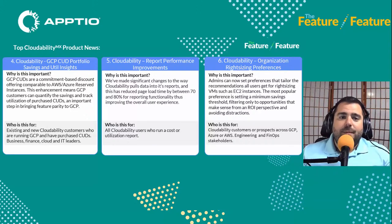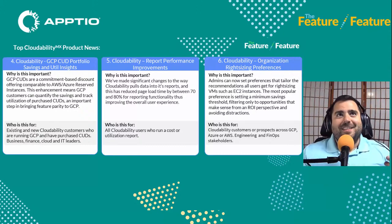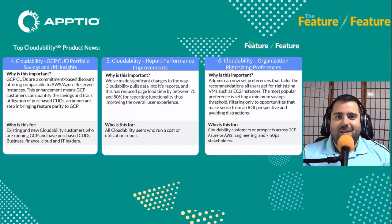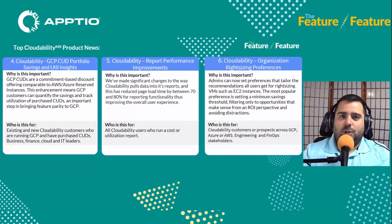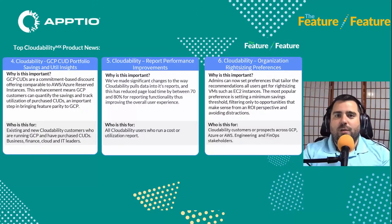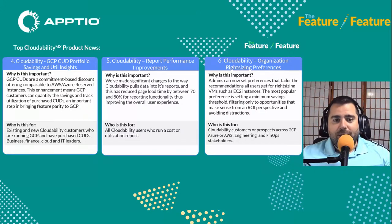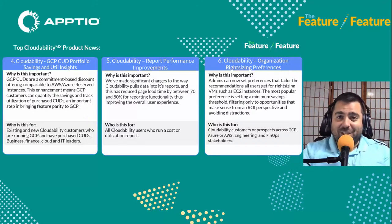Cloudability organization right-sizing preferences: admins can now set preferences that tailor the recommendations all users get for right-sizing VMs, especially EC2 instances. Cloudability surfaces those right-sizing recommendations, but the feedback we got was that admins just want to surface the most efficient option rather than having distractions from other available options. Cloudability isn't just looking at cost — it also surfaces different options for compute and processing to show how you're actually saving. But now you can set it to just show the most cost-efficient option when it comes to right-sizing preferences, which is really great.